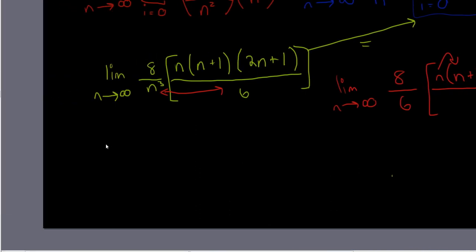You get the limit of n goes to infinity of 8 over 6 times, when you foil this out, you get 2n cubed plus 3n squared plus n all over n cubed. So now there's two things we need to do here, and then we can wrap it up,